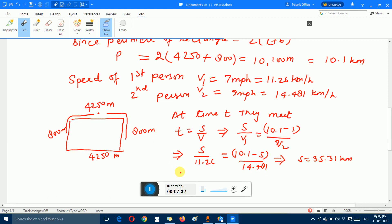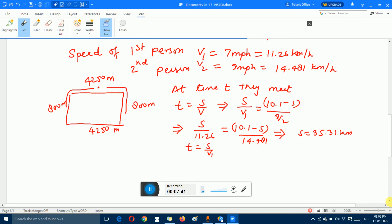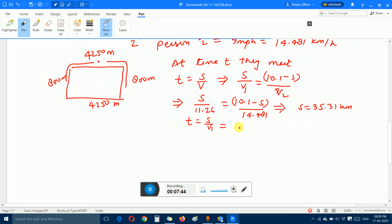Then the time when they meet, T equals S divided by V1. Distance 5.31 upon 11.26, which is 3.14 hours. So they meet after 3.14 hours.